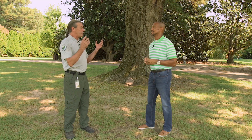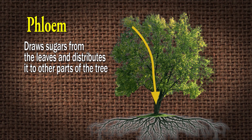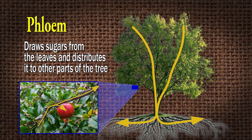The phloem tissue is the vascular section of the tree that takes the energy produced by the leaves and disperses it throughout the tree's parts. The phloem flows in two — or even three — directions. The rays of the wood run from the interior part of the tree outward to where the sapwood is, carrying nutrients radially to the sapwood.